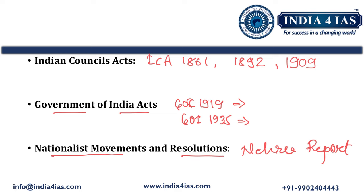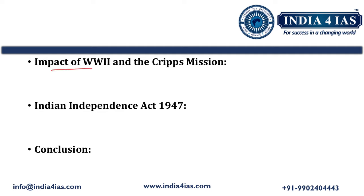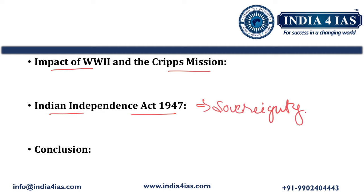Then there were various Round Table Conferences with deliberations on constitutional reforms that we should mention. Further, we should talk about the impact of World War II and the Cripps Mission on constitutional development — such as proposals for Indian Dominion status after World War II and their rejection by Indian leaders leading to the Quit India Movement. Finally, we should talk about the Indian Independence Act 1947, which gave sovereignty to India. We should conclude by highlighting the synthesis of British legal traditions and Indian aspirations in shaping a democratic and federal constitution for the Indian Union.